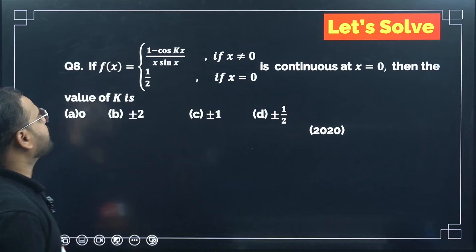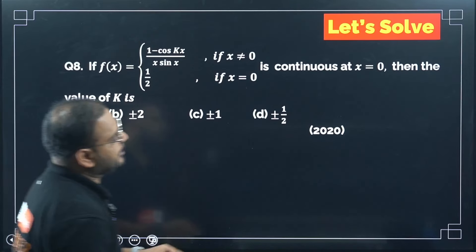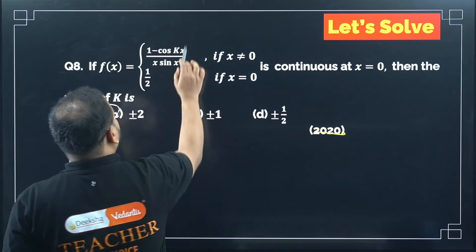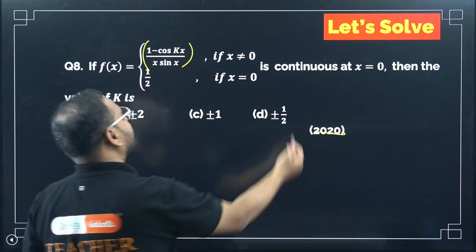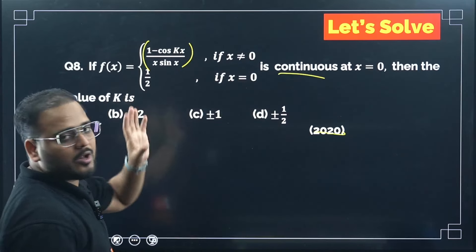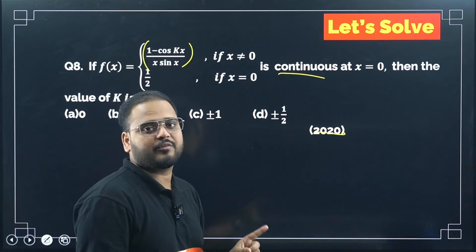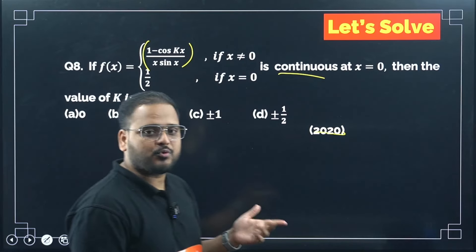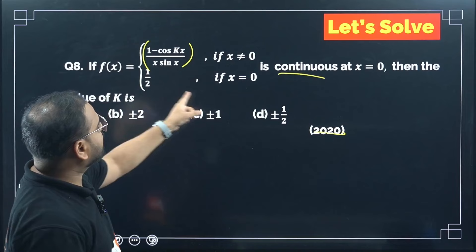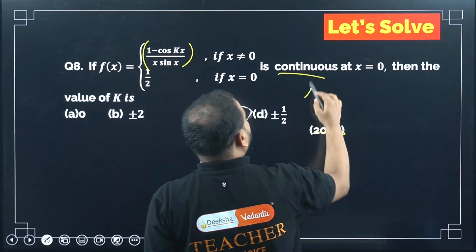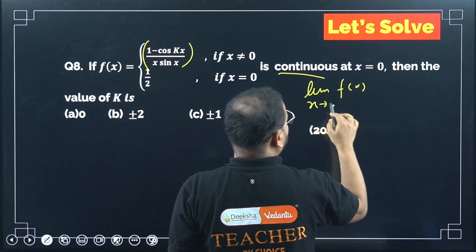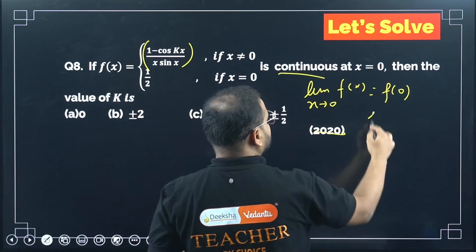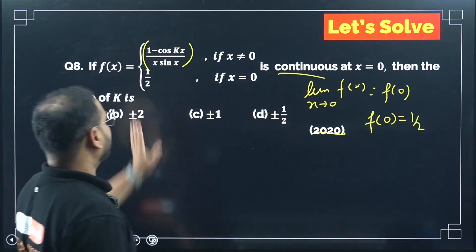Question 8 (2020): f(x) = (1 − cos kx)/(x·sin x) for x≠0, and f(0) = 1/2. Function is continuous at x=0, so the limit as x→0 must equal f(0) = 1/2. Similar continuity questions are asked every year (2018, 2019, 2020), so expect this type in future exams as well.